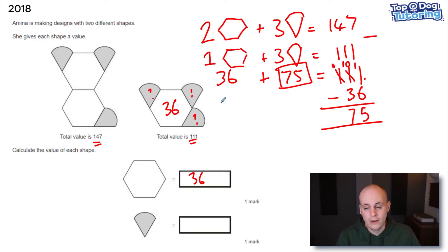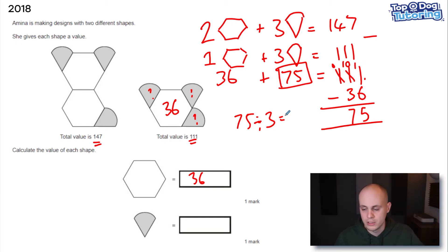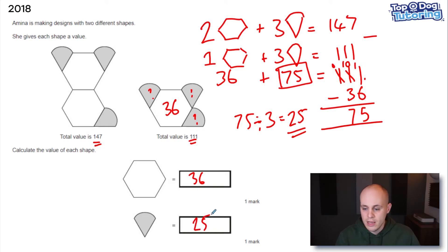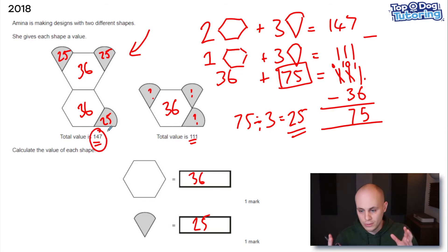Mathematicians who know their 25 times table will immediately recognise 75 as 25 plus 25 plus 25, so 75 divided by 3 is 25. If in doubt, do it in the bus stop. To check, go back to the first equation: 36 plus 36 plus 25 plus 25 plus 25 gives you 147 — proving you were correct. Pretty awesome.